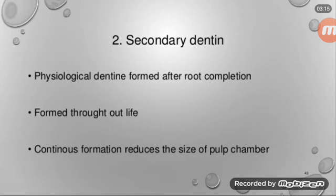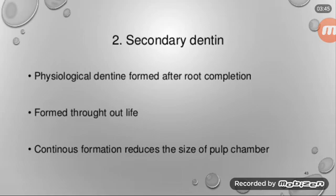Secondary dentine is formed after root completion, whereas primary dentine is formed till root completion. Secondary dentine forms throughout life. This continuous formation reduces the size of the pulp chamber.